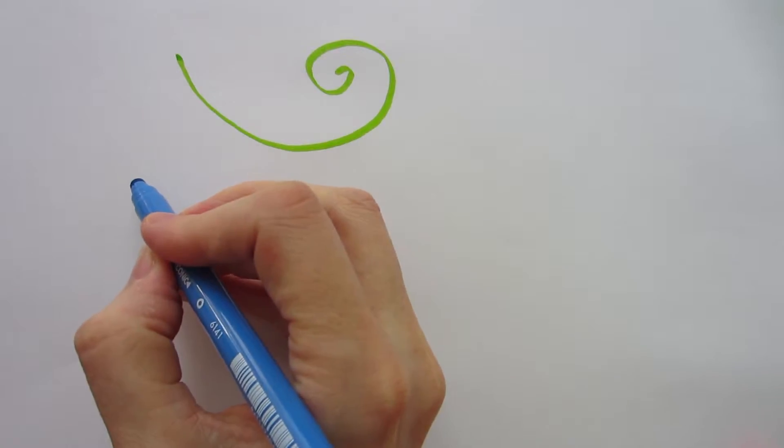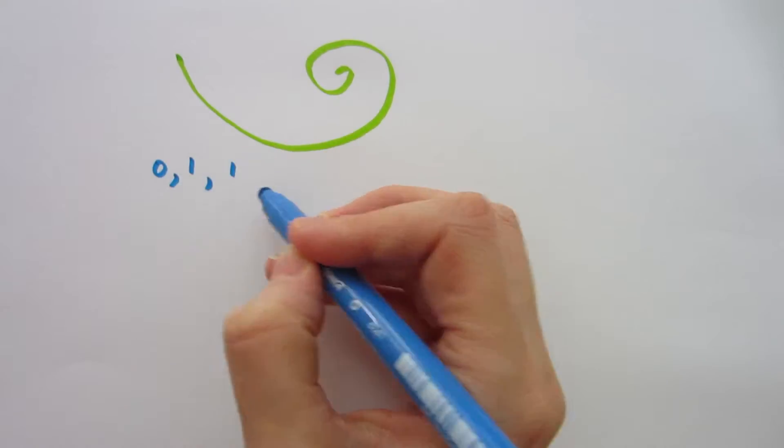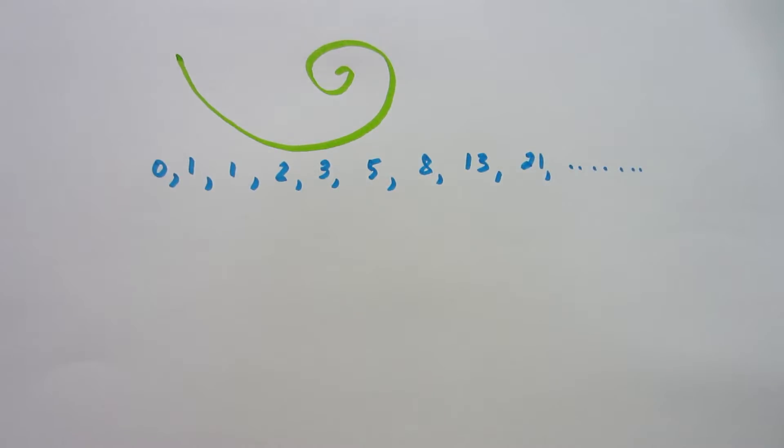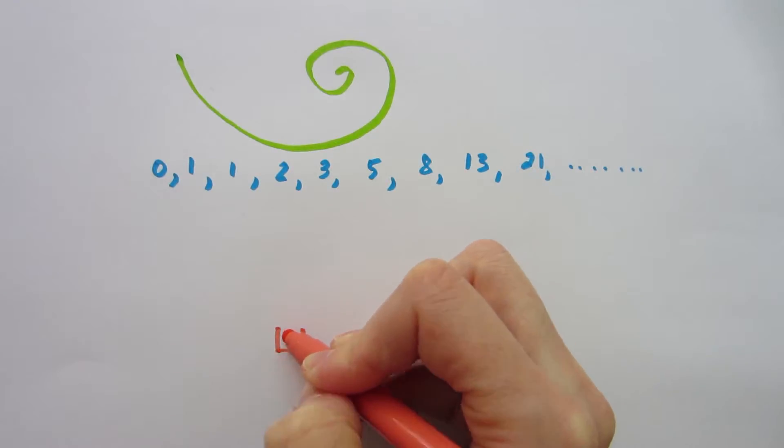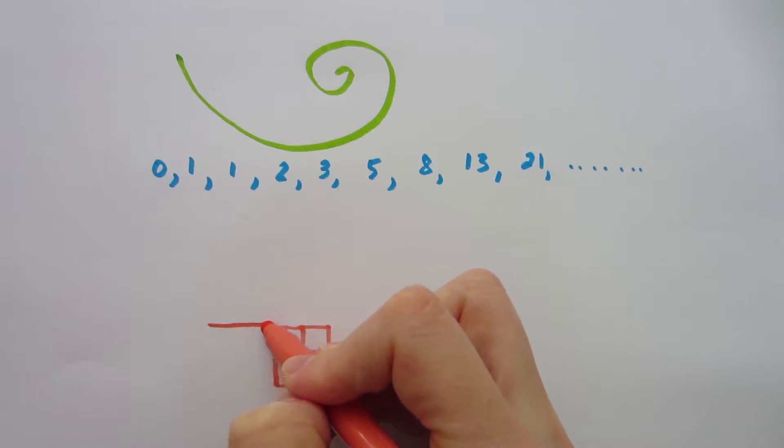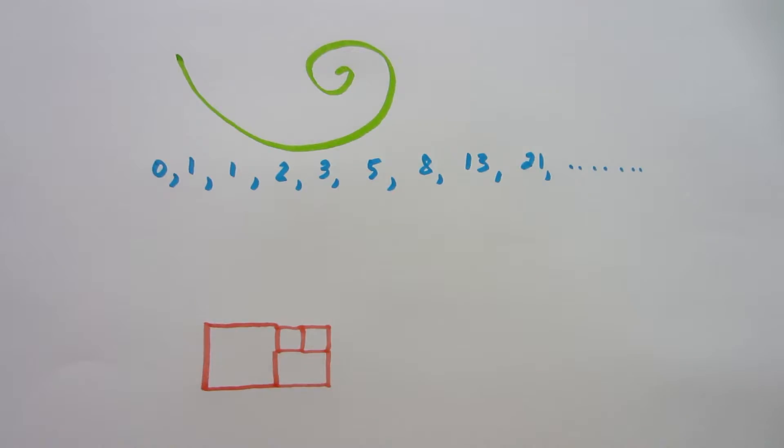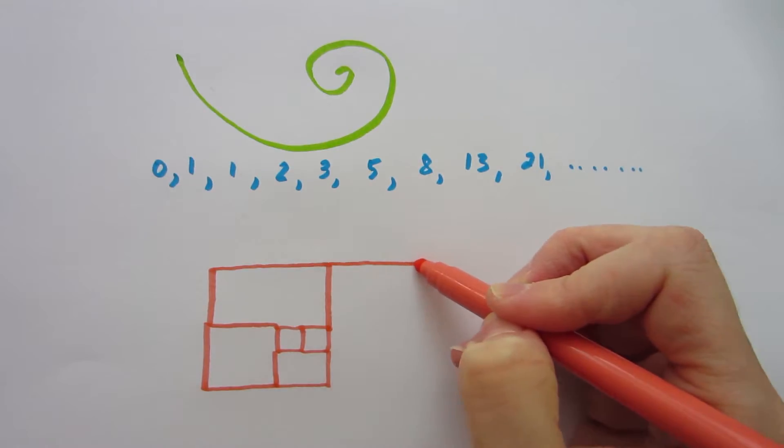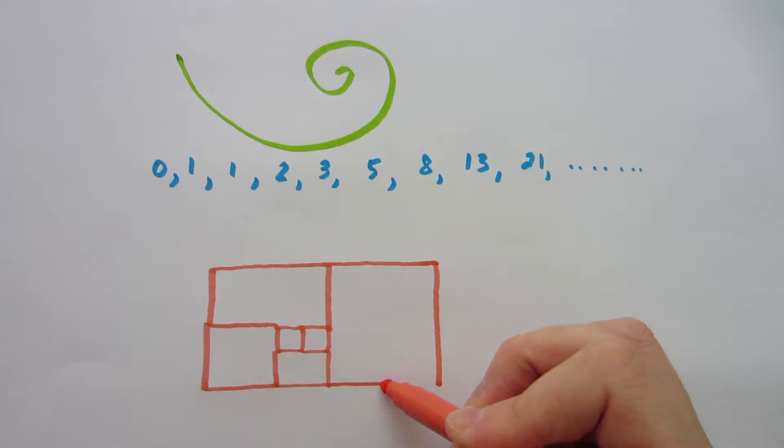Writing down the Fibonacci code, we have 0, 1, 1, 2, 3, 5, 8, 13 and so on. First, construct two 1x1 squares next to each other, then underneath a 2x2 square, to the left a 3x3 square, then above a 5x5 square and finally an 8x8 square to the right. This is known as the golden rectangle.